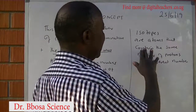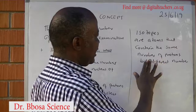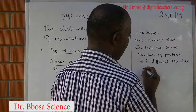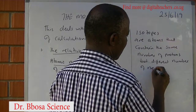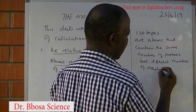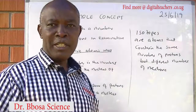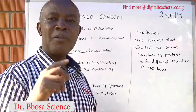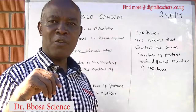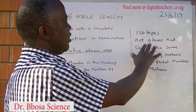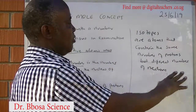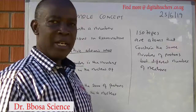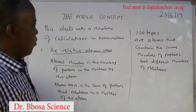Isotopes are atoms that contain the same number of protons but a different number of neutrons.